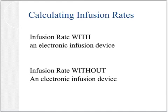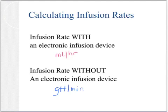You must first determine if an electronic infusion device is being used. If a device is being used, then you only have to calculate the infusion rate in milliliters per hour and then calibrate the infusion device accordingly. However, if an electronic infusion device is not being used, then you must calculate the infusion rate in drops per minute and manually set the infusion rate by adjusting the roller clamp on the tubing and counting the number of drops.